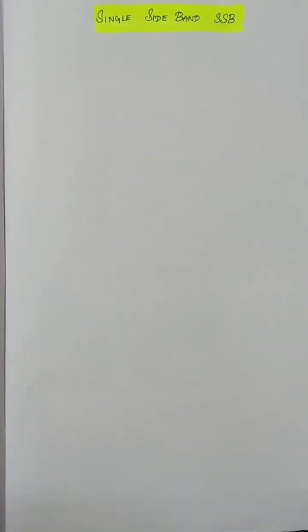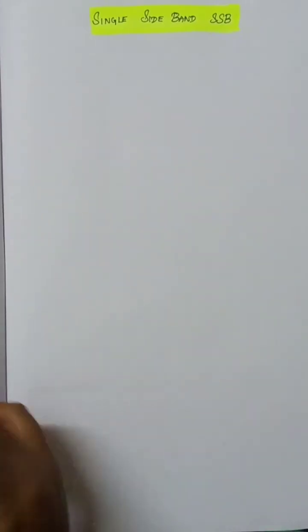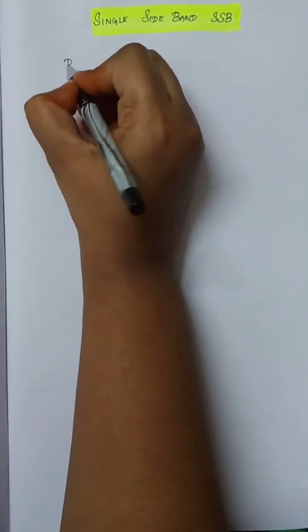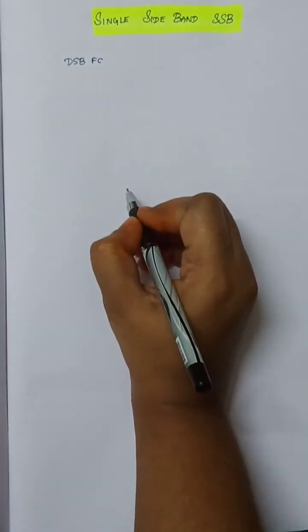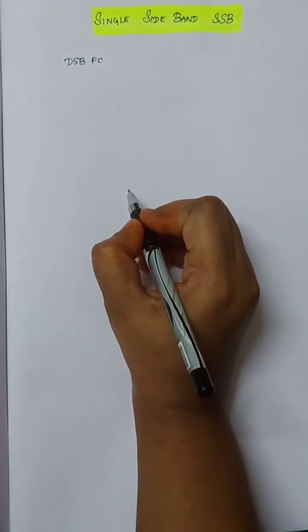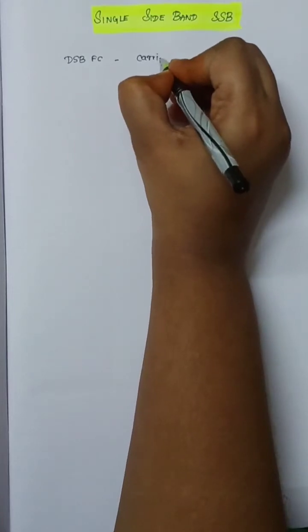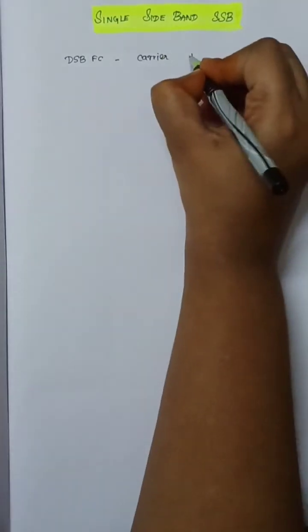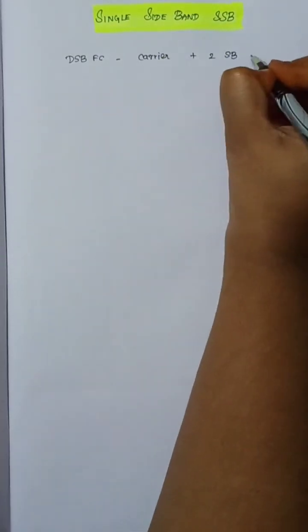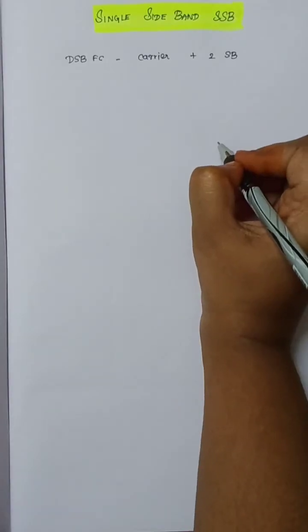Now we need to look at SSB — why do we need Single Sideband Modulation? First, let's look at DSB-FC, that is Conventional AM or DSB Full Carrier. Its components are a Carrier Wave plus two Sidebands: Upper Sideband and Lower Sideband.